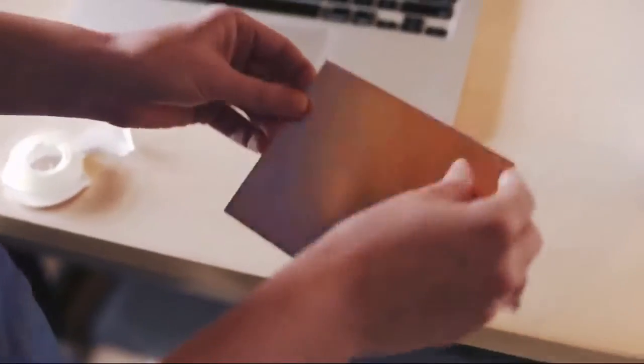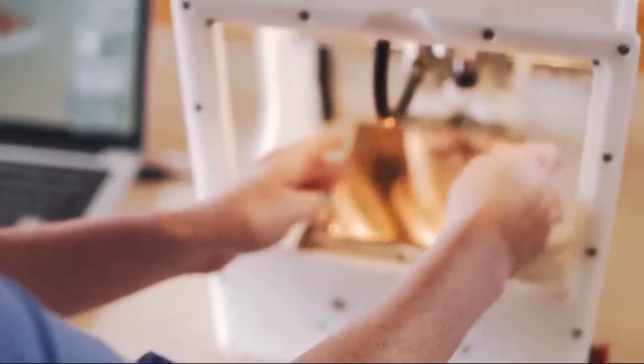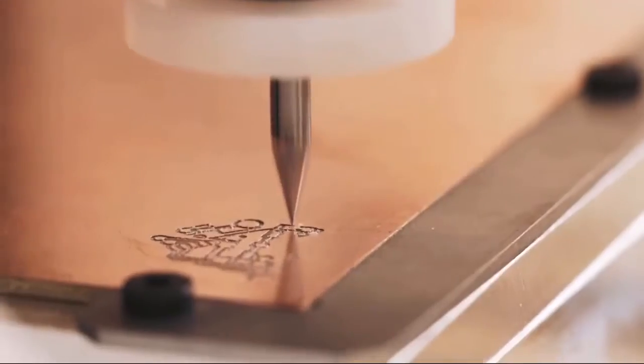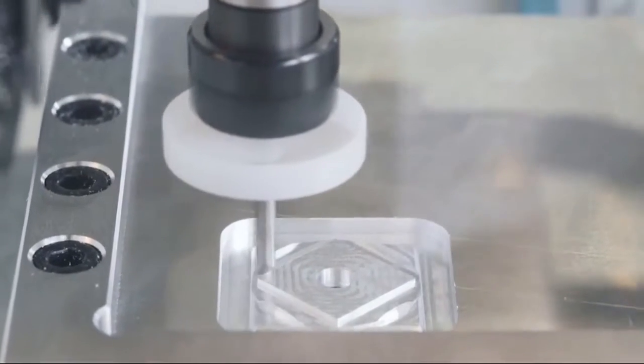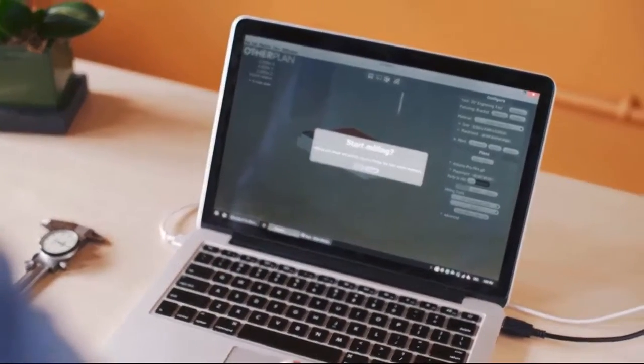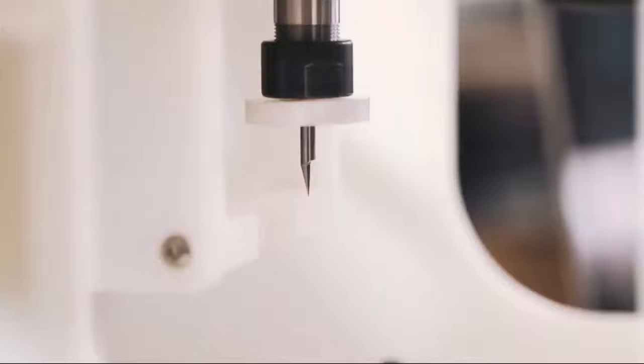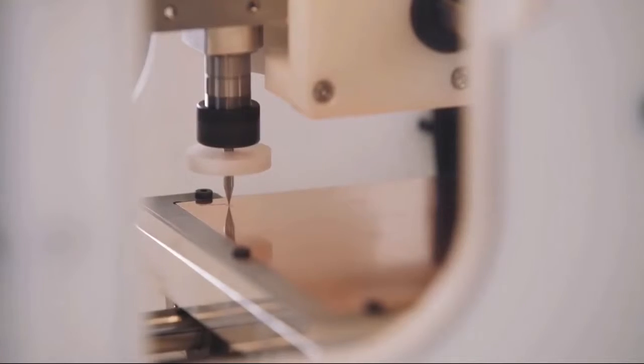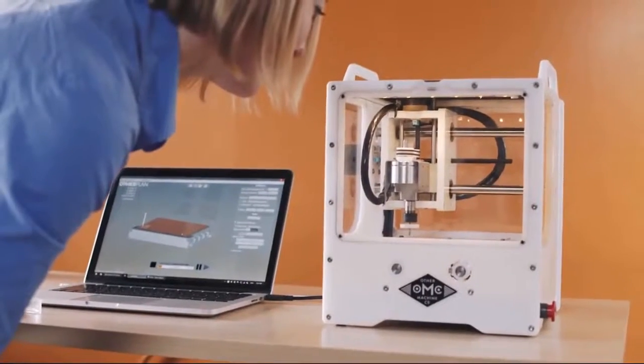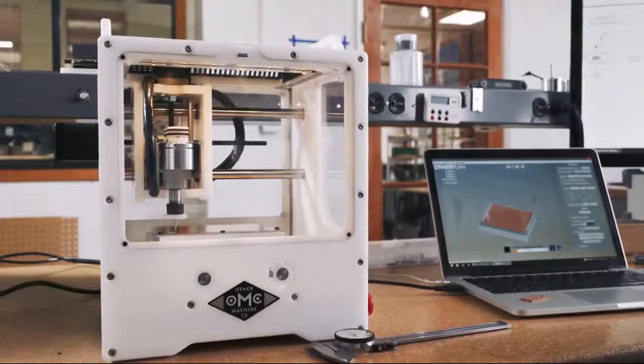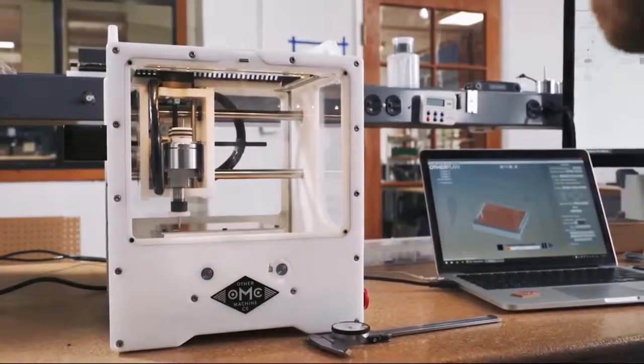Product development becomes fluid and agile when you can create looks-like, works-like prototypes in a fraction of the time with no training required. At Maitribe, we work with a host of industries—everything from consumer electronics to medical devices and automotive. We have a saying: build less faster. The quicker we can learn something, the faster we can get you on the right path. And so the Othermill has provided us this great opportunity to give our clients the right answer faster—to build less and build it faster.